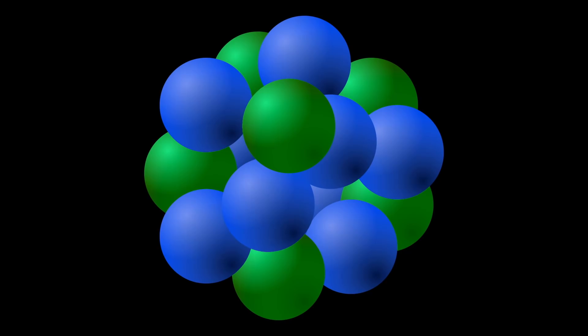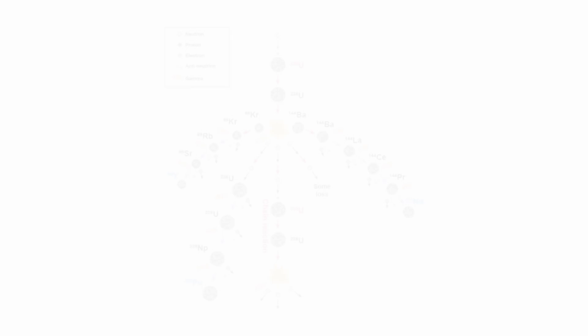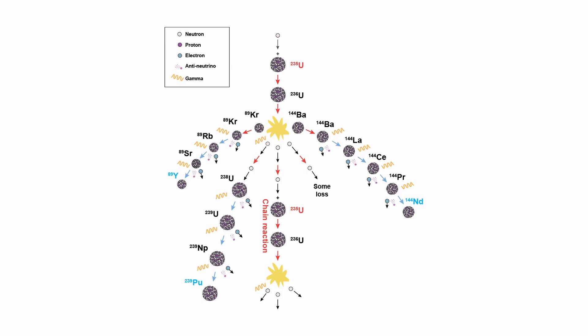There is no order to their nucleus and protons and neutrons occupy random locations, and yet radioactive decay will always result in the production of certain smaller components irrespective of this randomness. The structured atom model shows us a different way of looking at this.